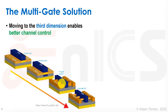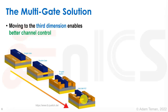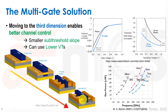The FinFET has three sides controlling the channel with only minor parasitic interference on the sides and bottom. The next step is the gate-all-around type, where the gate surrounds the channel on all four sides, giving very little parasitic capacitance fighting against it. This gives a much better sub-threshold slope compared to planar, and also allows the use of lower VTs for faster gates.